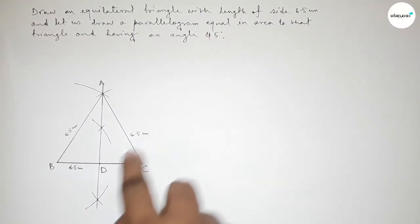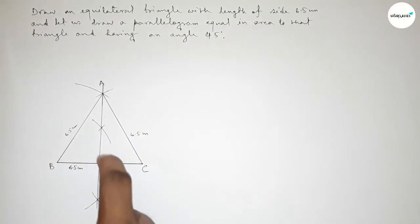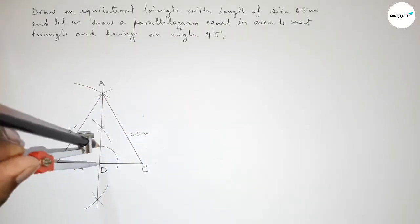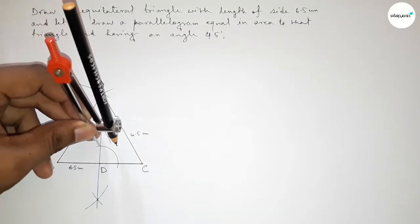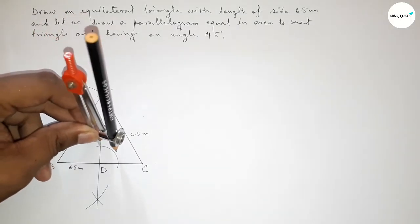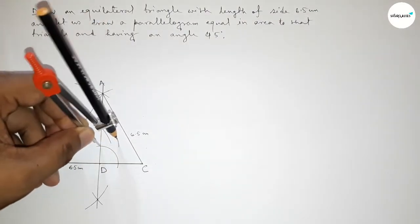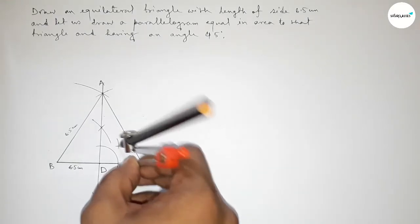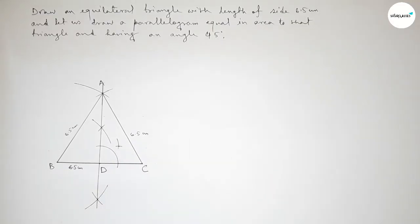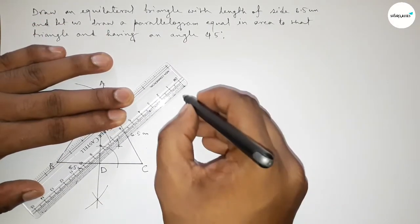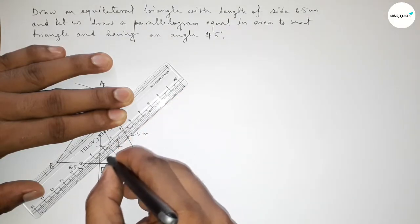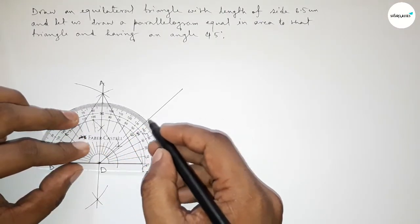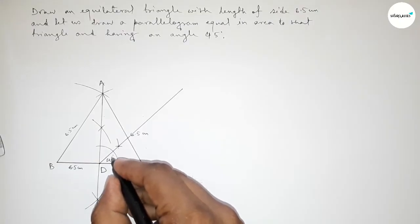Now we draw a 45 degree angle at point D. Since 45 degrees is half of 90 degrees, we bisect the right angle. Taking any length and drawing arcs, placing the compass with the same length and cutting arcs so both curves intersect. Joining this line gives us a 45 degree angle, confirmed by checking with a protractor.